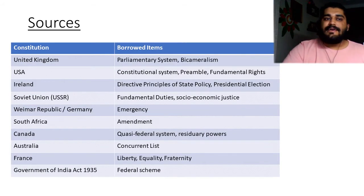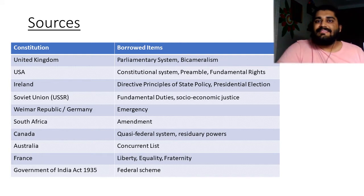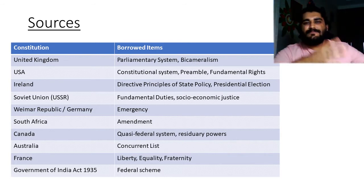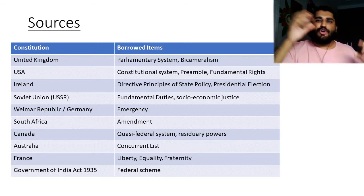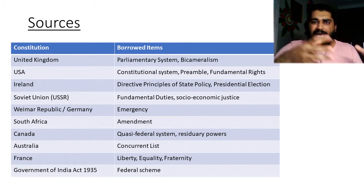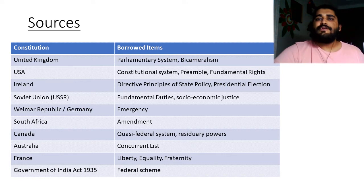There's quite a fanciful thing that people say — that our constitution is a borrowed constitution, that in these two years, 11 months and 17 days, what the Constituent Assembly has done is ransacked the constitution from different places and parts of the world, salvaged different aspects of different constitutions, and made a hybrid constitution for India. Now there is some proof to the matter; there are different parts of the constitution adapted from different parts of the world. However, it is not to be said that it is a stolen or borrowed constitution — it is more an adapted constitution.